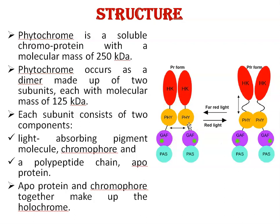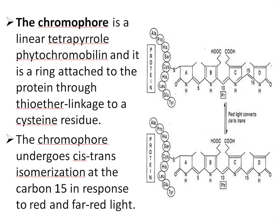When the PR form absorbs red light, it gets converted into the active form, that is the PFR form. The chromophore is a linear tetrapyrrole phytochromobilin, as you can see in this diagram. This ring is attached to the protein through a thioether linkage to a cysteine residue. Proteins are made up of amino acids, and this chromophore ring is attached to the cysteine residue of the protein with the help of a thioether linkage.